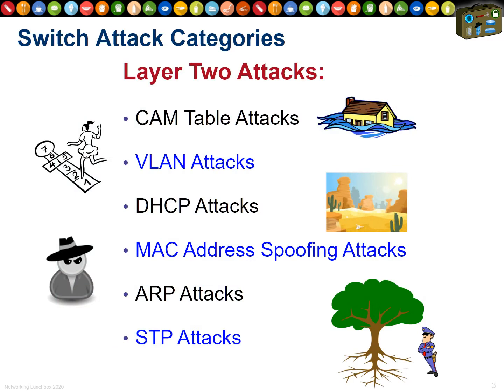We have the CAM table — Content Addressable Memory — the memory of a switch where MAC addresses live. VLAN attacks, DHCP attacks, MAC address spoofing attacks, address resolution attacks, and spanning tree protocol attacks. These are classic layer two attacks that are super easy to mitigate, but you have to turn on the commands to protect yourself from them. Let's look at them in turn.